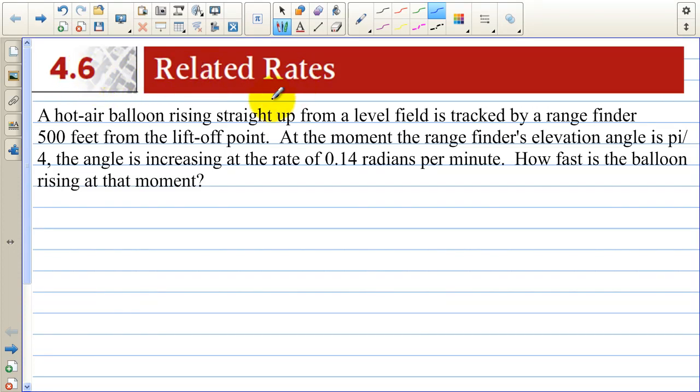In section 4.6 we're going to be working with related rates. In our first example, a hot air balloon rising straight up from a level field is tracked by a rangefinder 500 feet from the liftoff point. So we have to understand the problem. We have a balloon rising up and notice this side is going to get longer as the balloon rises up. We are 500 feet away from the liftoff point and we are tracking the rate at which this balloon is rising.